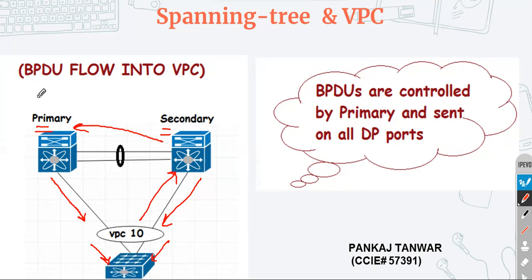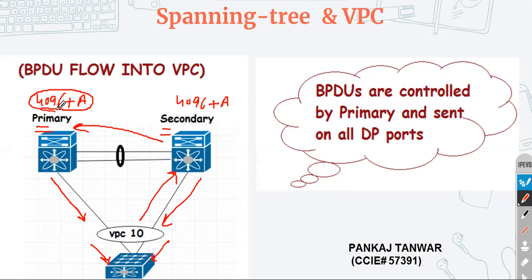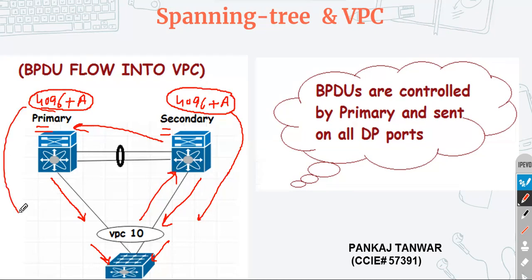Let's say we have configured the priority as 4096 on both sides. Because we are running the VPC peer switch feature, VPC is going to assign one common MAC address to both devices — let's say the MAC address is 'A'. So this becomes the bridge ID. The downstream device will receive the same bridge ID from both primary and secondary, which is not a problem.